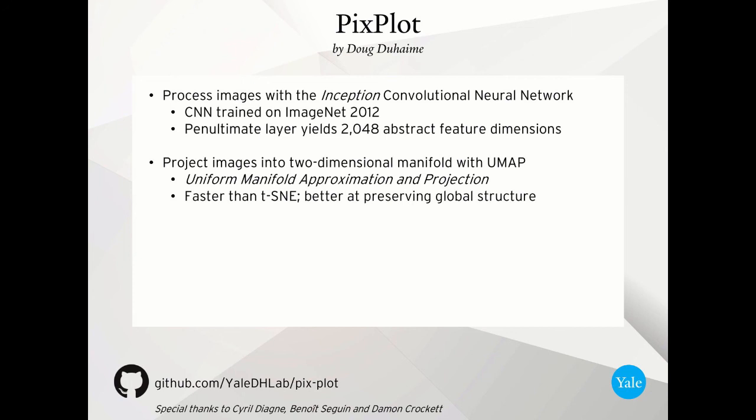I can't show you 2048 dimensions on my computer screen. But if I'm able to reduce the dimensionality of this high-dimensional space to two, then I have a hope of being able to show you the entire image collection organized according to visual similarity. We're going to use a particular dimensionality reduction called UMAP here, which stands for Uniform Manifold Approximation and Projection. This is similar to t-SNE or T-Stochastic Neighbor Embedding. And just like t-SNE, it tries to preserve global structure in the reduced dimensionality visualization as well as preserving local clusters.